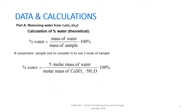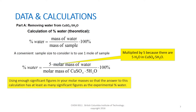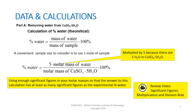The theoretical percentage of water in copper sulfate pentahydrate can be determined by calculating the mass of water in 1 mole of copper sulfate pentahydrate. In 1 mole of copper sulfate pentahydrate there are 5 moles of water, so the mass of water is 5 times the molar mass of water. The formula is: 5 times the molar mass of water divided by the molar mass of copper sulfate pentahydrate, multiplied by 100%. Ensure you use enough significant figures in your atomic masses to match the experimental value. It may be useful to review the video on significant figures, multiplication and division rule.